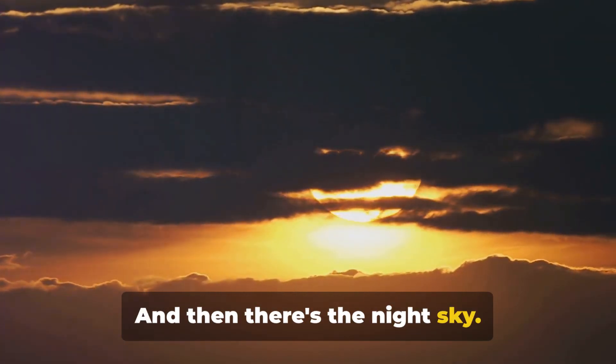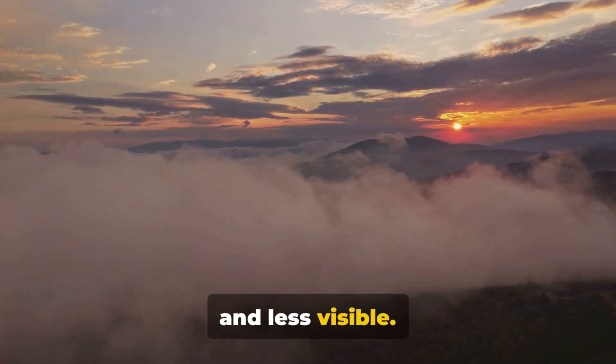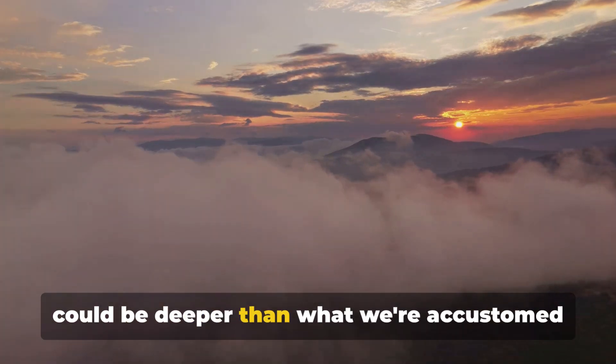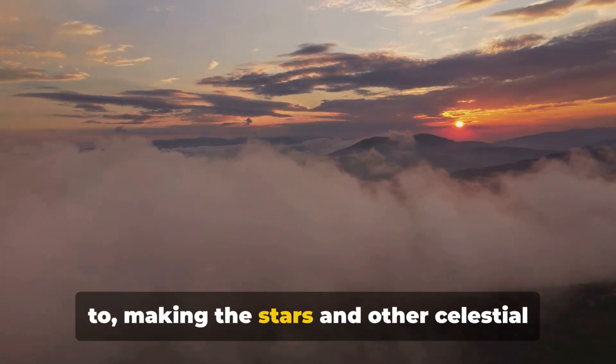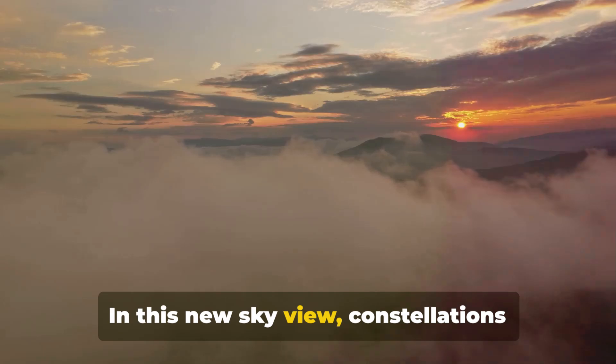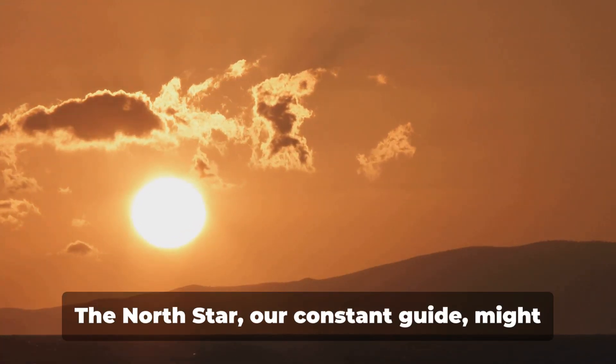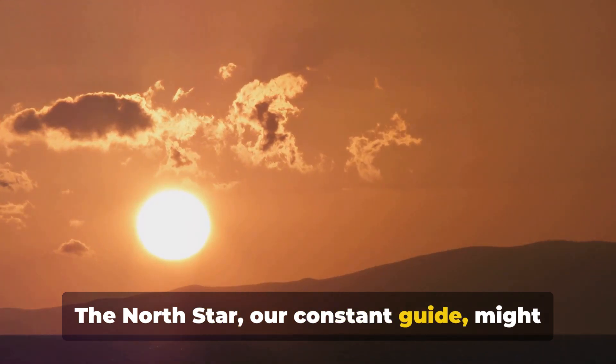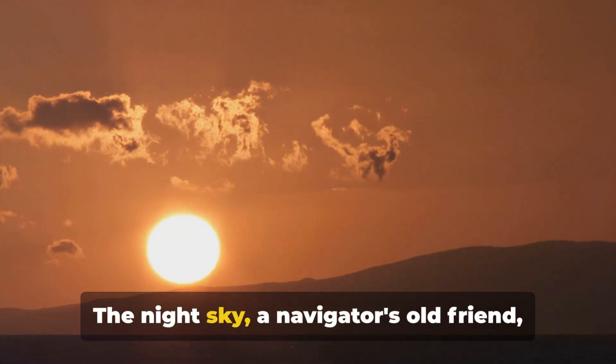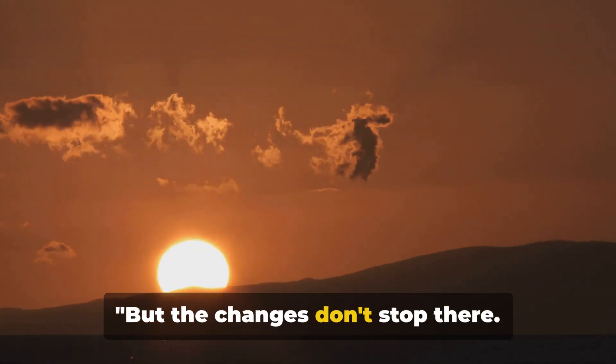And then there's the night sky. With two suns, the stars may seem dimmer and less visible. However, when both suns set, the darkness could be deeper than what we're accustomed to, making the stars and other celestial bodies appear more brilliant. In this new sky view, constellations might shift or even disappear, and new ones could form. The north star, our constant guide, might no longer hold its place of prominence. The night sky, a navigator's old friend, would become a new frontier.